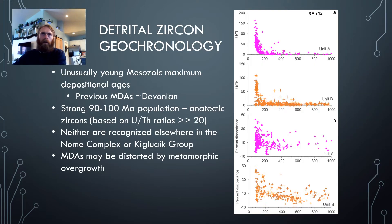We did some detrital zircon geochronology using uranium-lead on the paragneisses and got some surprising results. We got really unusually young maximum depositional ages of Triassic or younger that we cannot rule out, and a clear Middle Cretaceous anatectic zircon population that is obvious through really high uranium-thorium ratios. These ages are not recognized elsewhere in the Kiglawake group or Nome Complex.